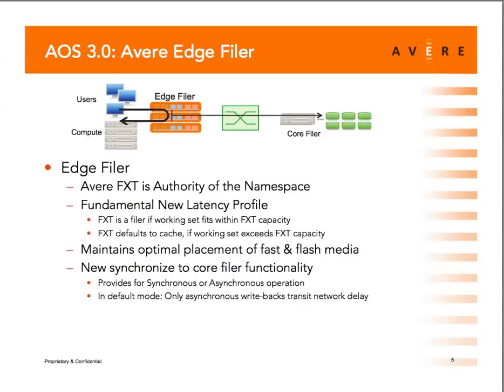On slide five, we've added an asynchronous write-back path that is totally outside of the transactions being serviced to users. We take whatever data is in the edge filer and ensure a copy ends up on the core filer, so the core filer remains the ultimate data repository as always. The Avere FXT becomes an edge filer that services all transactions and uses asynchronous write-back to ensure all data ends up at the core filer.